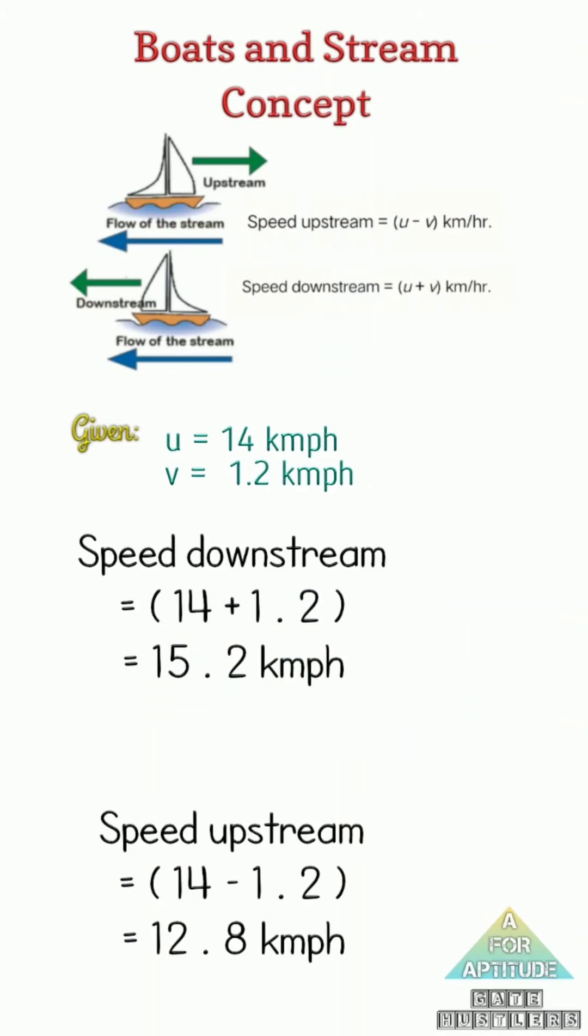And second thing: upstream and downstream. Now u is equal to 14, v is equal to 1.2. If you are going to the stream, upstream and downstream. Upstream is equal to minus - against the direction. Downstream is equal to plus - along the direction. So u plus v, u minus v. u plus v: 14 plus 1.2. u minus v: 14 minus 1.2.